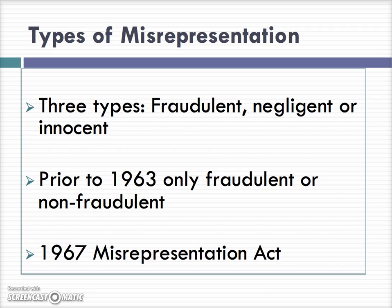Prior to 1963, there was only fraudulent or non-fraudulent misrepresentation. What happened in 1963 was the case of Hedley Byrne, which we'll come back to in a few moments. Another important milestone in the law of misrepresentation was the 1967 Misrepresentation Act in the UK. There is a conflict between what happened in 1963 with the case of Hedley Byrne and the 1967 Misrepresentation Act. Basically, both the common law and legislators felt that there was a need to fill a gap between fraudulent and non-fraudulent misrepresentation, in particular because of a 1962 Law Reform Commission Report, which then resulted in the 1967 Act.